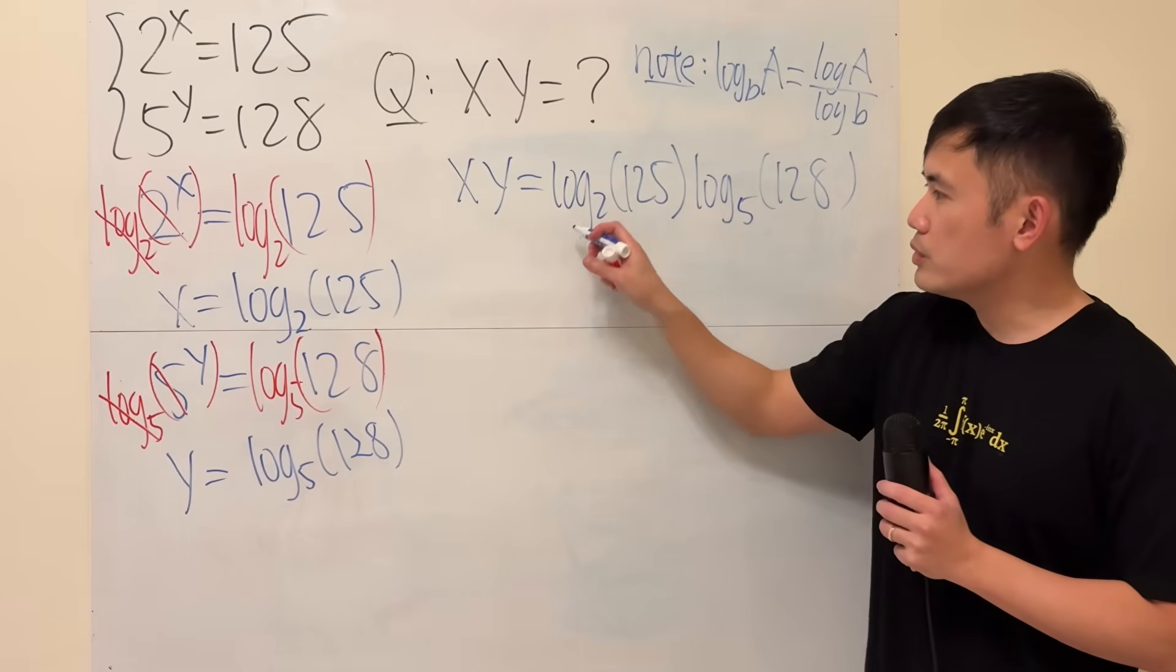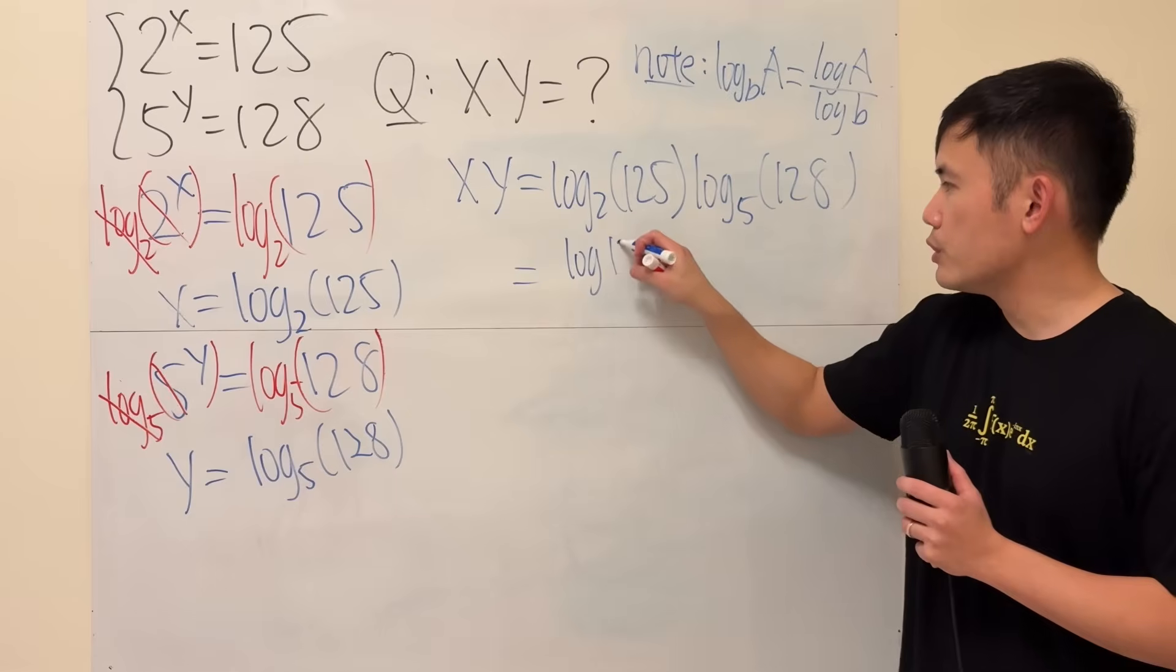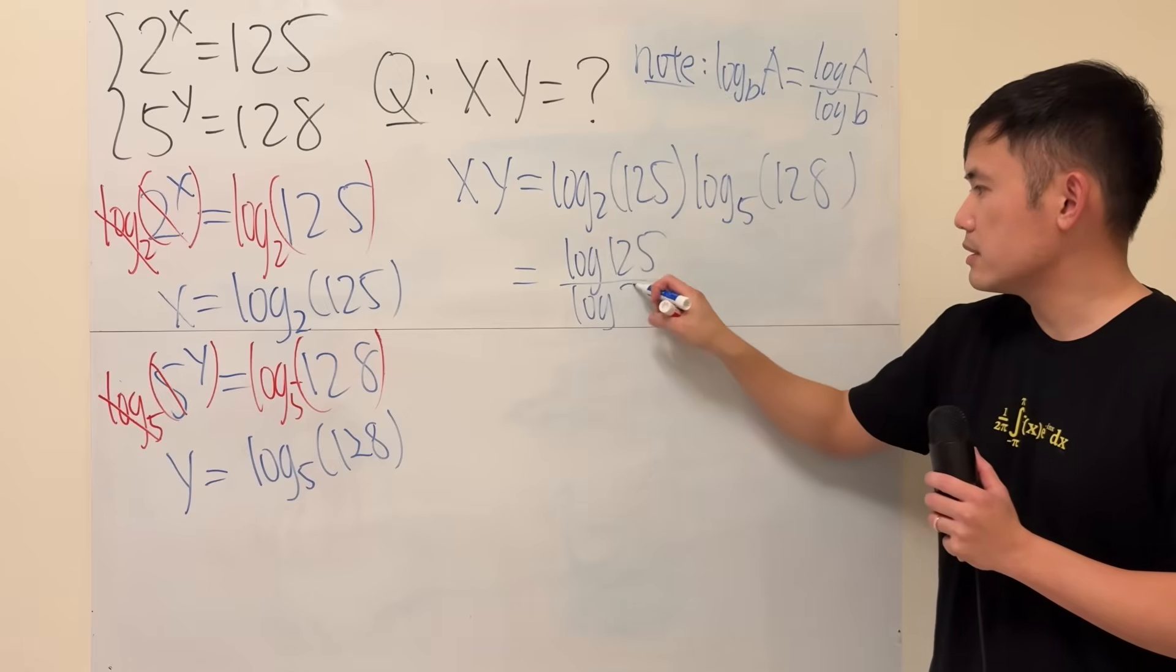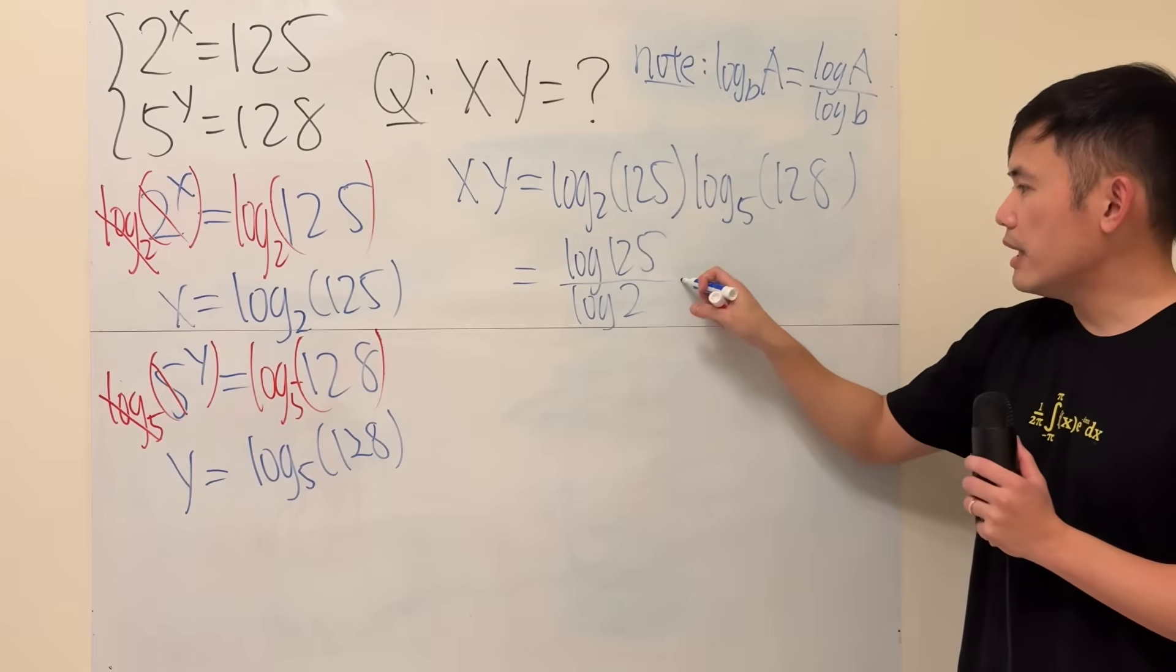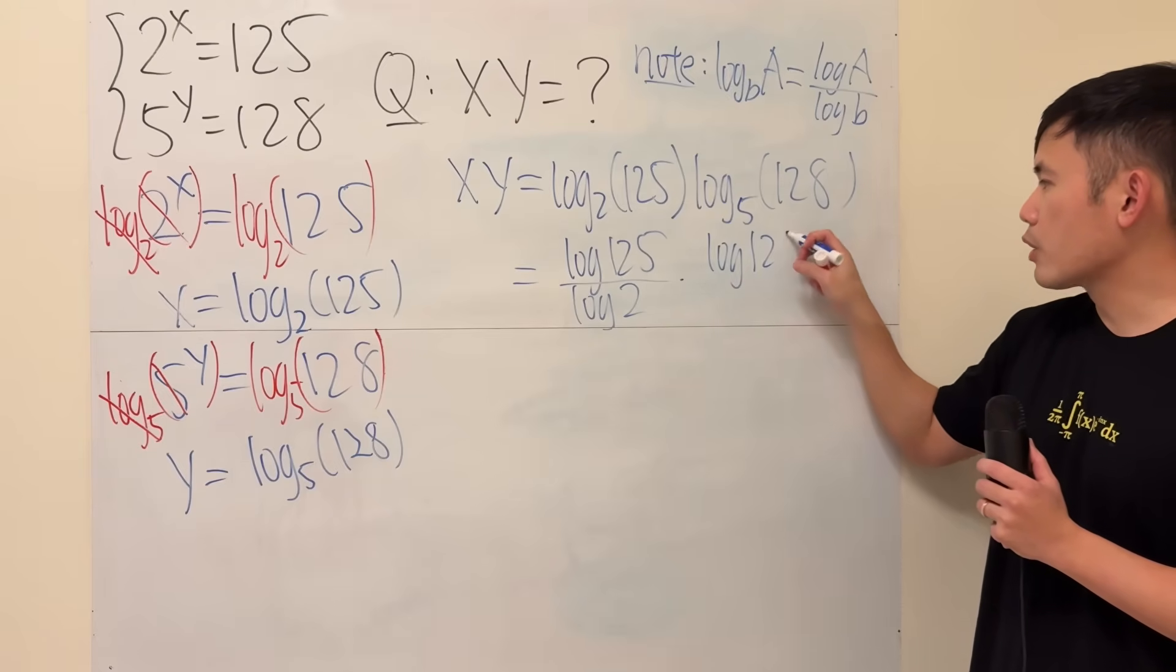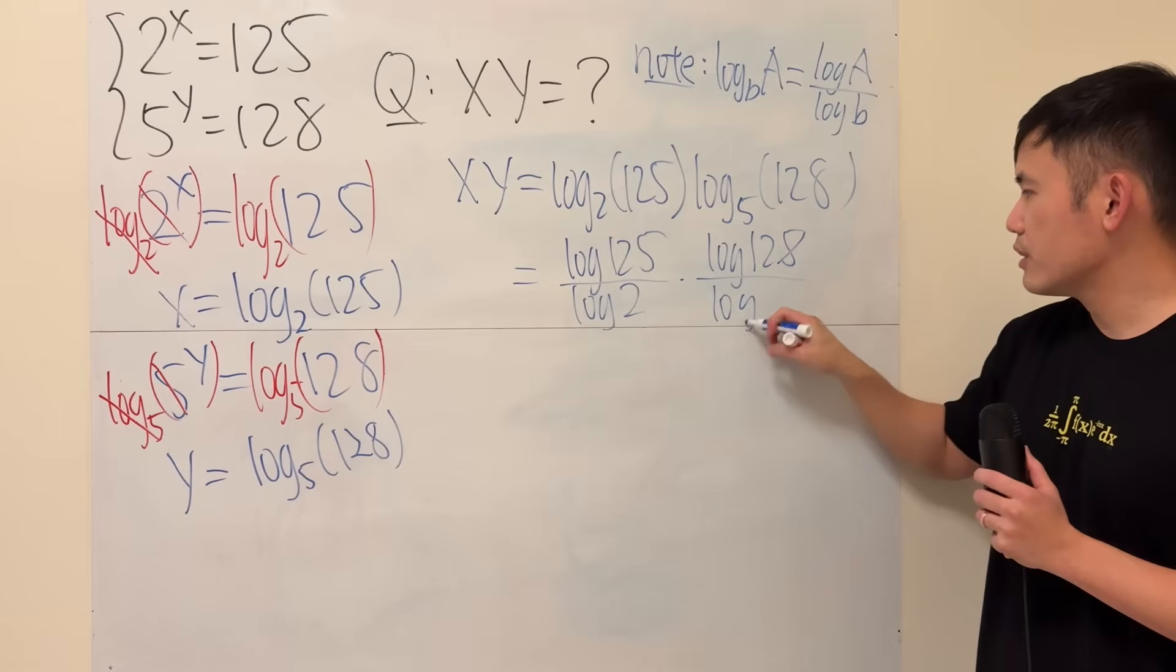So I'm going to just rewrite this as log of this input, which is 125, over log of the base 2, like that. Then we multiply that by change of base formula, log 128 over log 5.